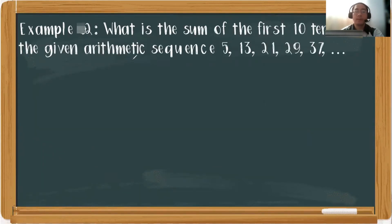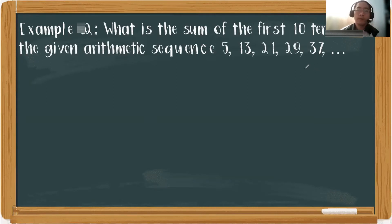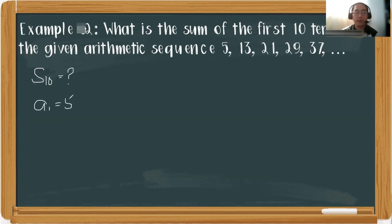Example number 2: What is the sum of the first 10 terms of the given arithmetic sequence 5, 13, 21, 29, 37? We are looking for the first 10 terms. We already have our first term, which is 5, but we don't have the value of our 10th term because that is the requirement of our series.